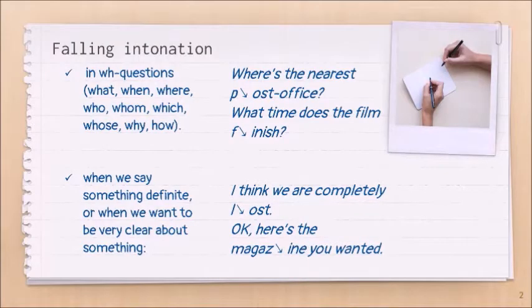Falling intonation describes how the voice falls on the final stressed syllable of a phrase or a group of words. Falling intonation is very common in WH questions, which means questions that begin with what, when, where, who, whom, which, whose, why, and how. We use them to ask for information and the answer cannot be yes or no.